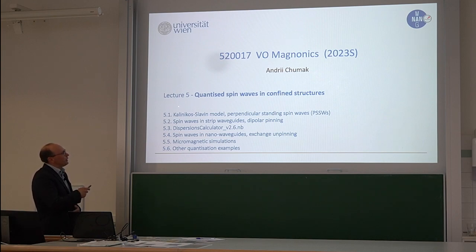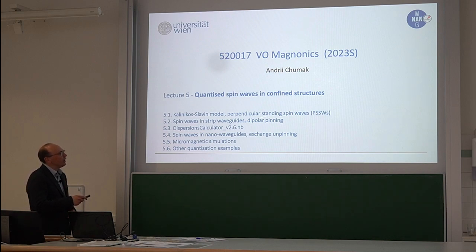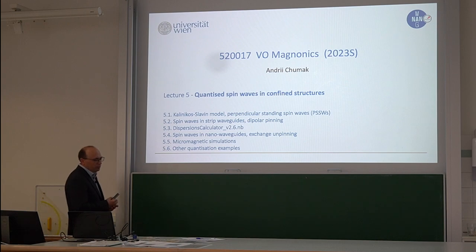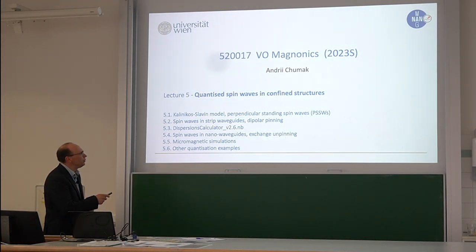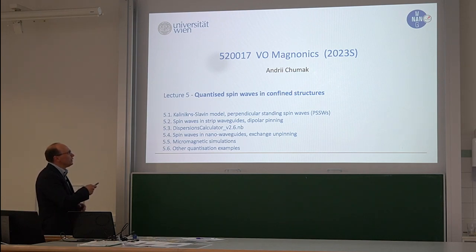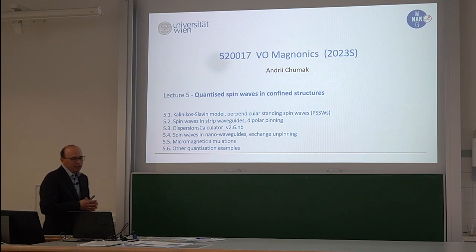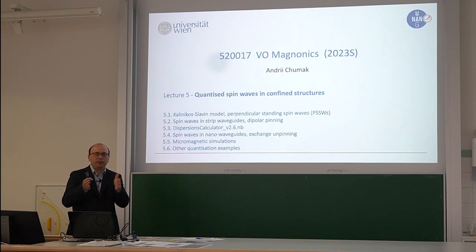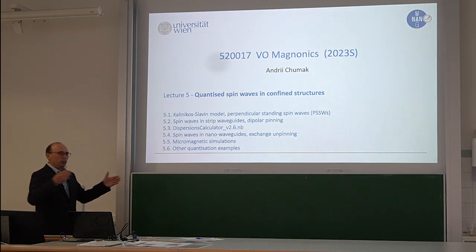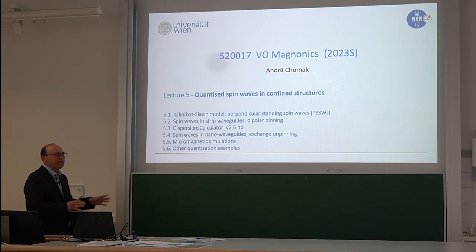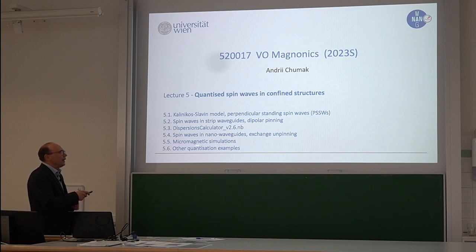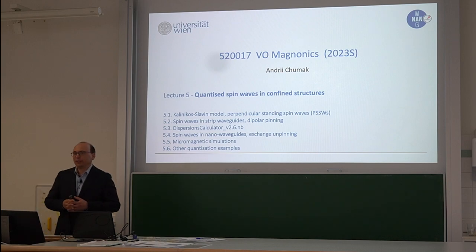What I'm going to discuss in this part: the Kalinikos-Slavin model and what is PSSV, spin waves and strip waveguides, and dipolar pinning. Then we will discuss some simple code written in Mathematica for calculating dispersion using the Kalinikos-Slavin model. Then we will switch to nano-waveguides to show what is different when the width is below about 300 nanometers, followed by a few words about micromagnetics and some other examples about quantization of spin waves.